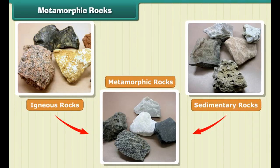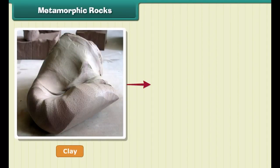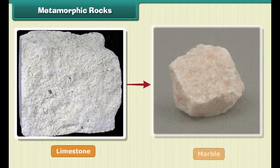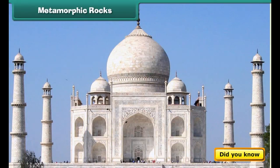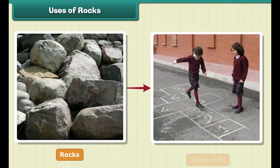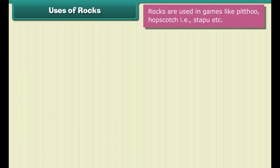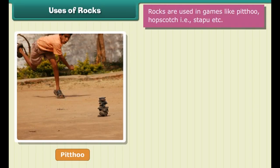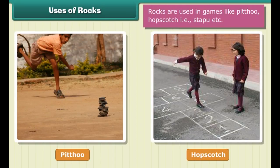These types of rocks are called sedimentary rocks. Limestone and sandstone are the examples of sedimentary rock. The third type of rock is made out of the first two types. These are metamorphic or changed rocks. Igneous and sedimentary rocks can change into metamorphic rocks under great heat and pressure. For example, clay changes into slate and limestone into marble.